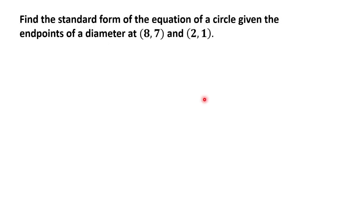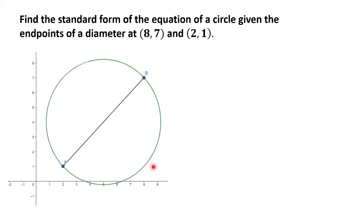Let us find the standard form of the equation of a circle with endpoints of a diameter at (8, 7) and (2, 1). So let's say this is the circle that you would like to get the equation of. This is point (8, 7) and this would be (2, 1). Let's say this is point D and this is point A.